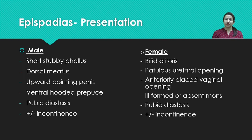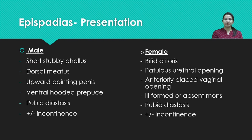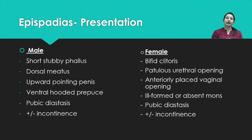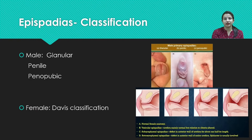For female babies, they will have a bifid clitoris, the urethral opening will be patulous, the vaginal opening will be anteriorly placed, and the labia will be poorly formed. A common finding in epispadias is pubic diastasis. If the urethral meatus is near the bladder neck, patients may also have dribbling of urine or present with urinary incontinence.